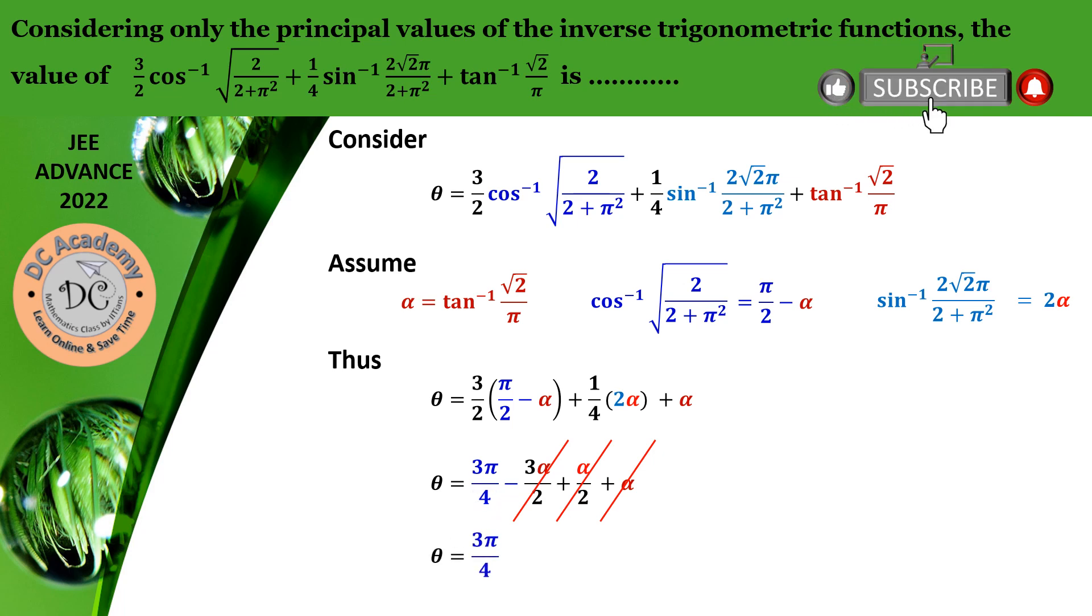Hence, theta will be 3 pi by 4. Therefore, the simplified version or simplified value of the given expression reduces to 3 pi by 4. And that's it. And that's the answer.